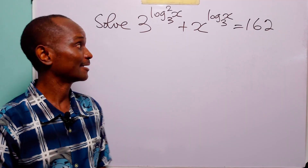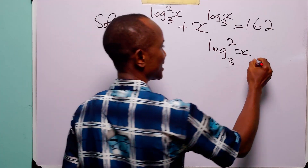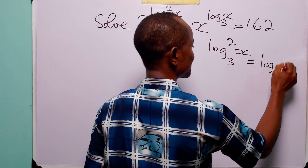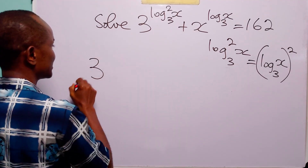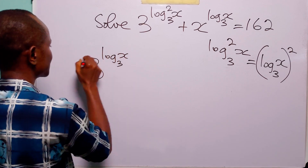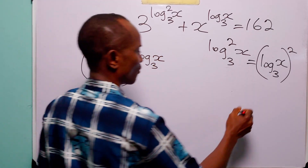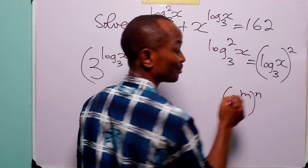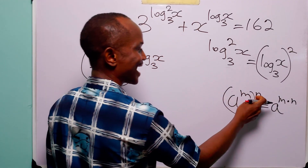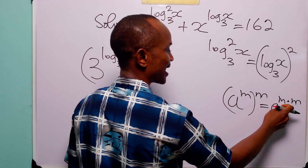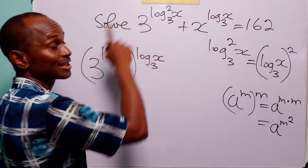To solve this problem we must start by reminding ourselves that log to base 3 squared of x is simply equal to log to base 3 of x, all squared. So we can rewrite the first term as 3 to the power log to base 3 of x, raised to the power log to base 3 of x. Remember that a to the power m raised to power n is simply equal to a to the power m times n, so when n equals m this gives a to the power m squared — which is exactly what we have here.